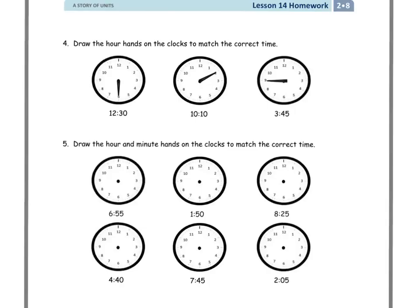Number 4 says draw the hour hands on the clock to match the correct time. So now we've got the minutes in because they're the longer hands. Now I need to figure out, it's got to point to the 12. And when I do this, I'm going to draw the smaller hand.